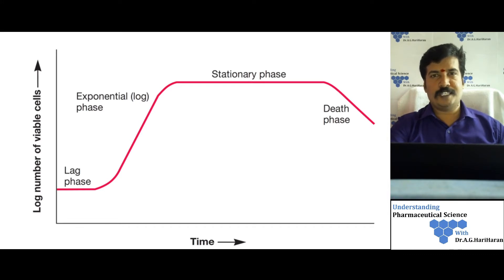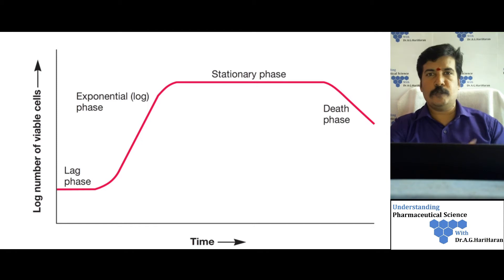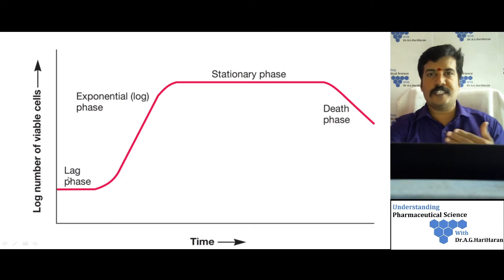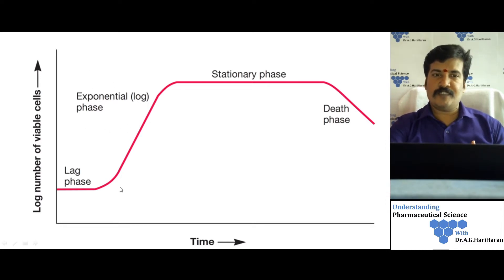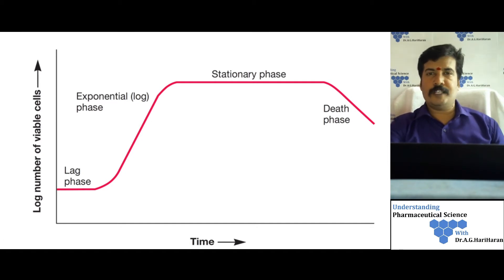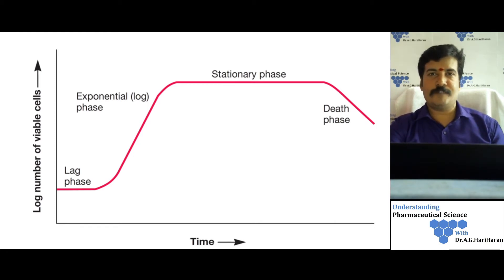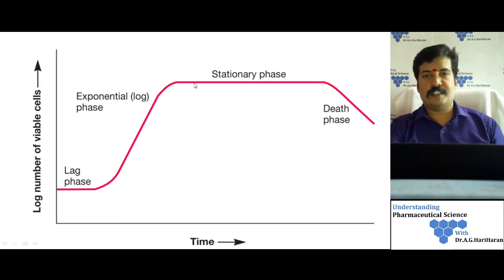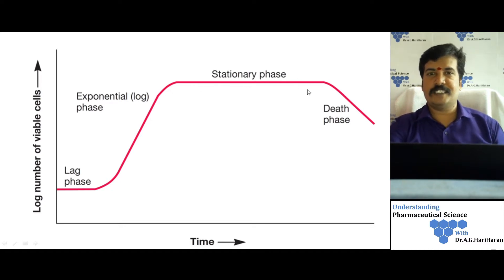In the lag phase, once we inoculate bacteria from a different environment into the growth medium, the cell retunes its cellular components so it can start taking nutrients and begin cell division. In the exponential phase, the number of viable cells increases because cells divide at an exponential rate. In the stationary phase, nutrients begin to deplete, so the number of cells dividing becomes equal to the number dying, or the bacteria become metabolically inactive, giving a straight horizontal line.